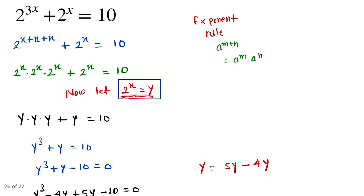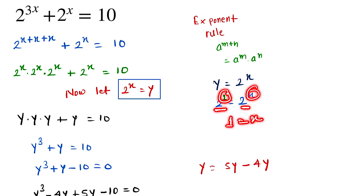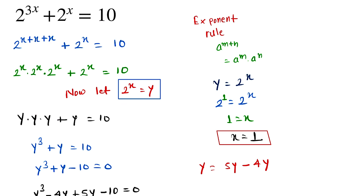We already defined y = 2 to the power x. Substituting y = 2 gives 2 = 2 to the power x, which can be written as 2 to the power 1 = 2 to the power x. Since the bases are the same, the exponents must be equal, so x = 1. This is our final answer.